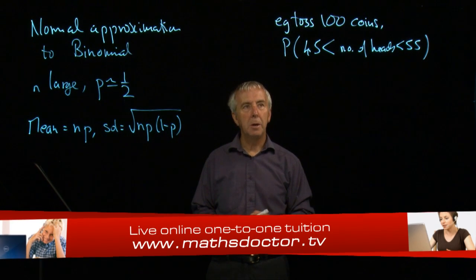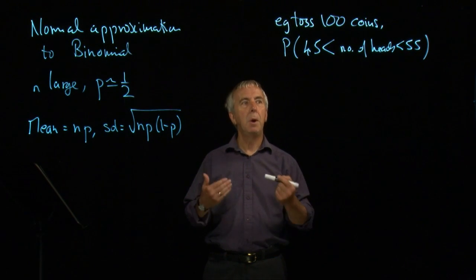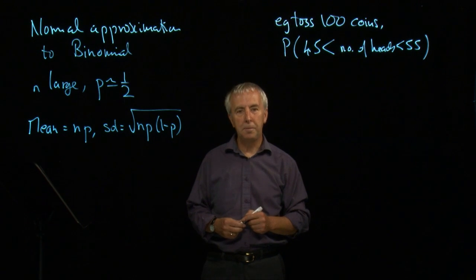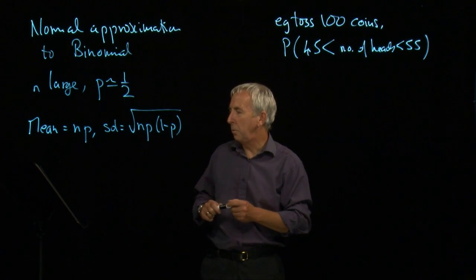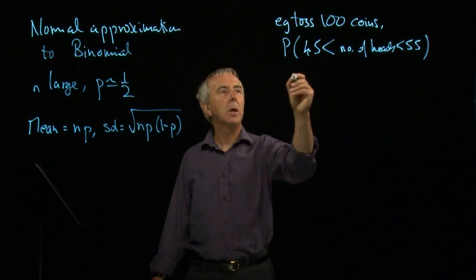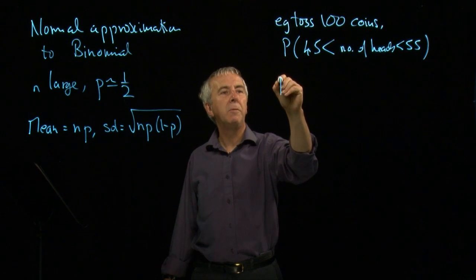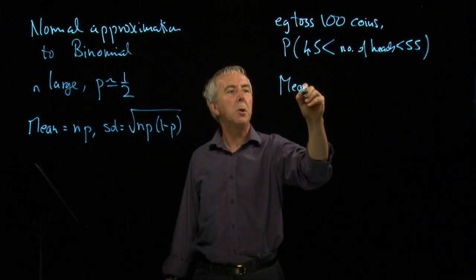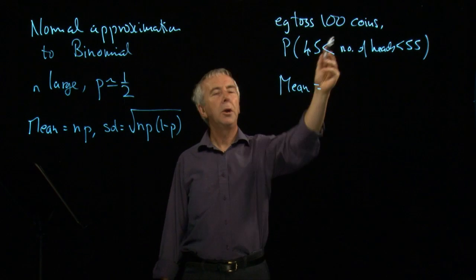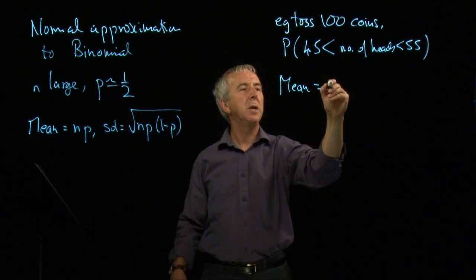So what we do instead is replace this by the normal distribution. And it works as follows. We do the conversion we've had before. Let's first of all write down what the mean is. 100 times a half, the mean is 50.